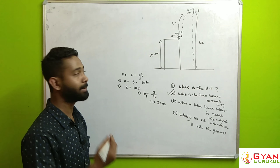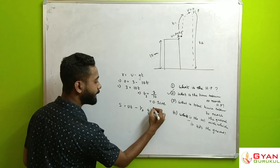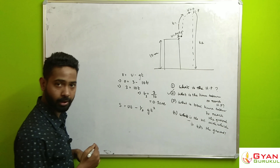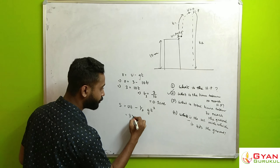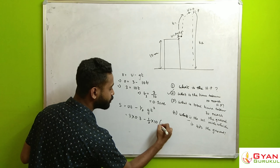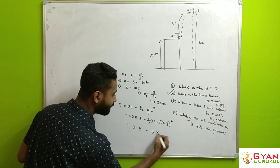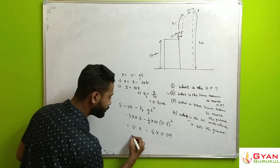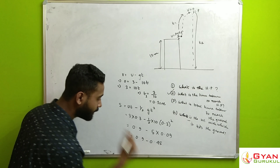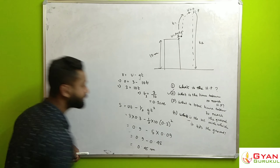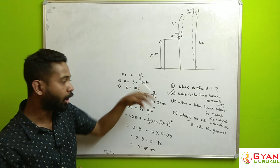In order to find the highest point distance, we use S = ut − ½gt². We substitute: u = 3, t = 0.3. So S = 3 × 0.3 − ½ × 10 × (0.3)² = 0.9 − 5 × 0.09 = 0.9 − 0.45 = 0.45 meters. This is the distance of the highest point from the roof of the building.